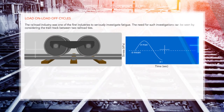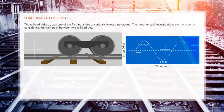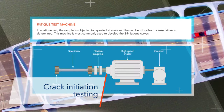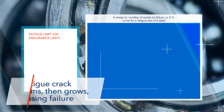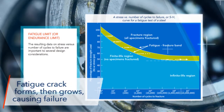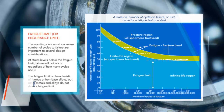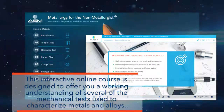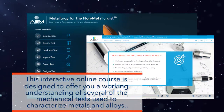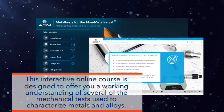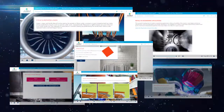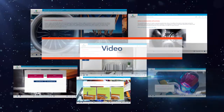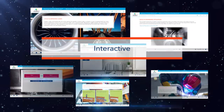Where parts are subject to cyclic or repeated loads, crack initiation testing provides data about the number of stress cycles after which a fatigue crack forms and then grows large enough to cause failure. This interactive online course is designed to offer you a working understanding of several of the mechanical tests used to characterize metals and alloys, and their importance in assuring successful design outcomes and safe system operations.